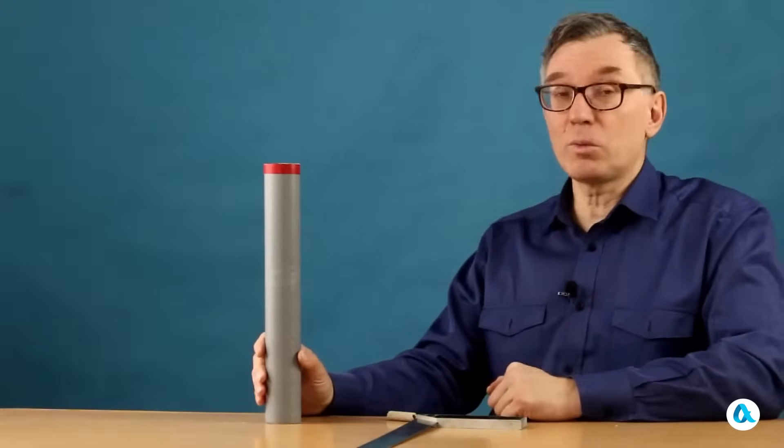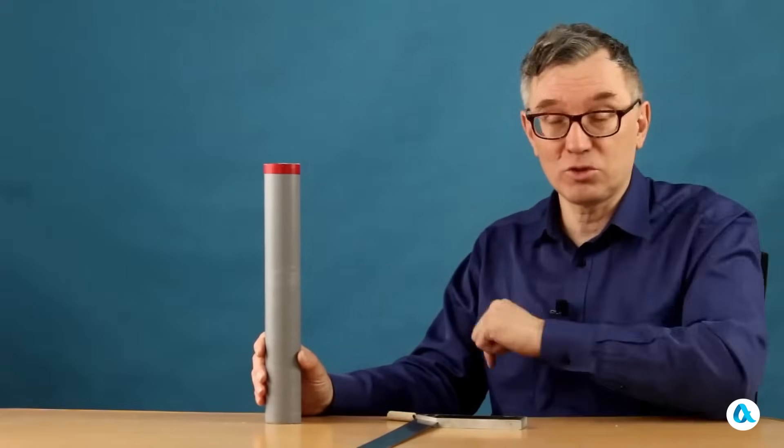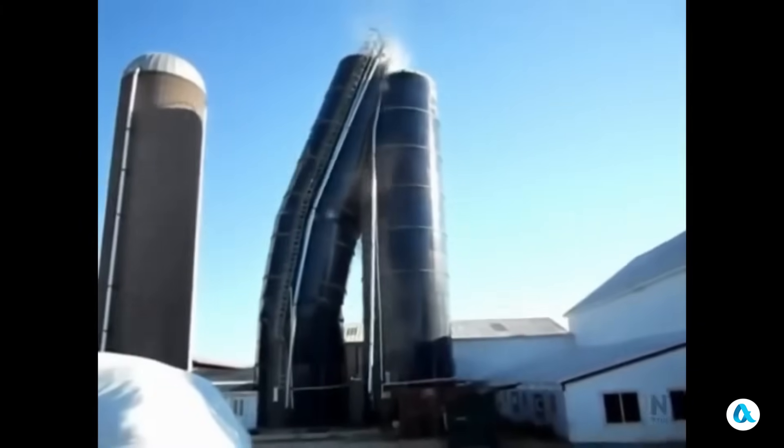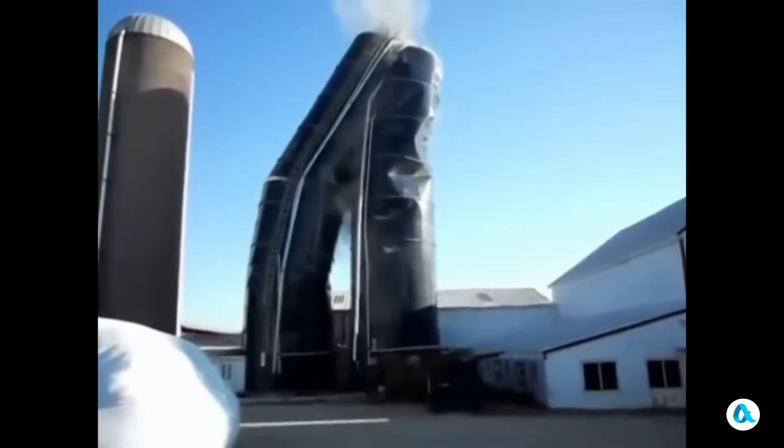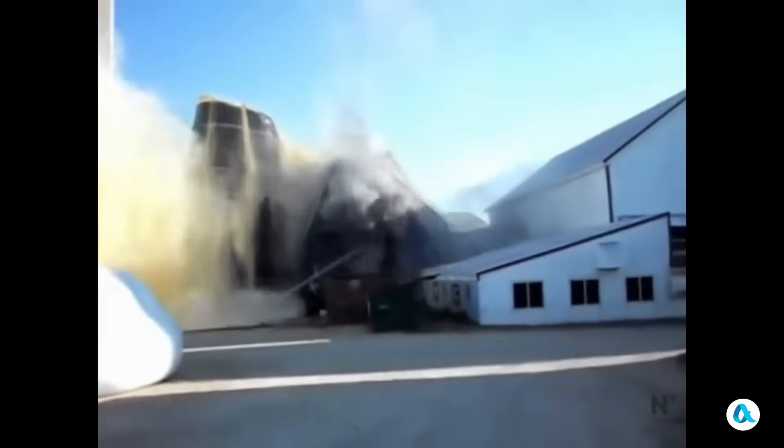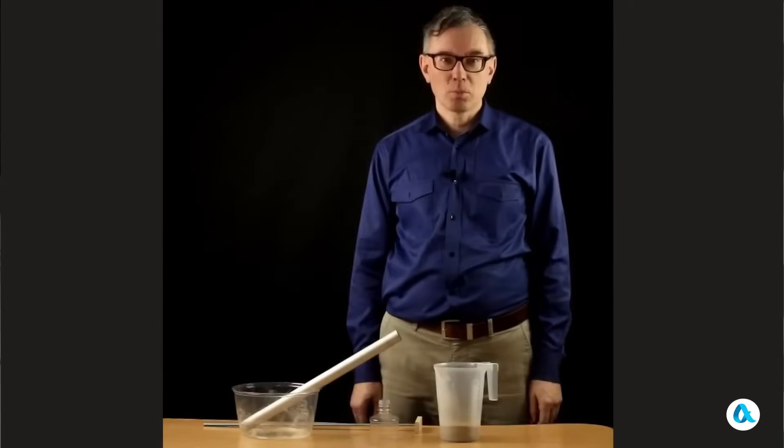I would like to emphasize our main result once again. If we pour sand into a long tube, almost all of its weight rests on the walls of the tube, while only a small part of that sand's weight is on the bottom. If the walls of such a tube are thin enough, the weight on them can lead to a loss of stability. And the tube, it will unexpectedly collapse.